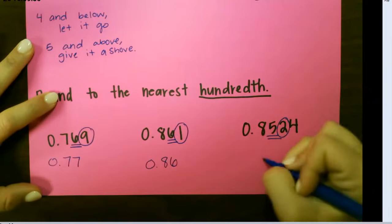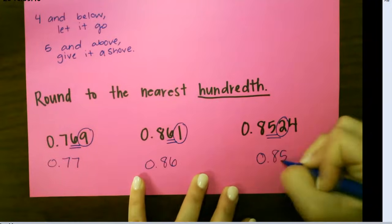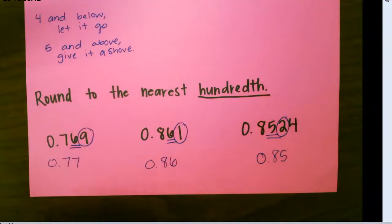And for our last one, 2 is also below 4, so we leave it alone at 0 and 85 hundredths.